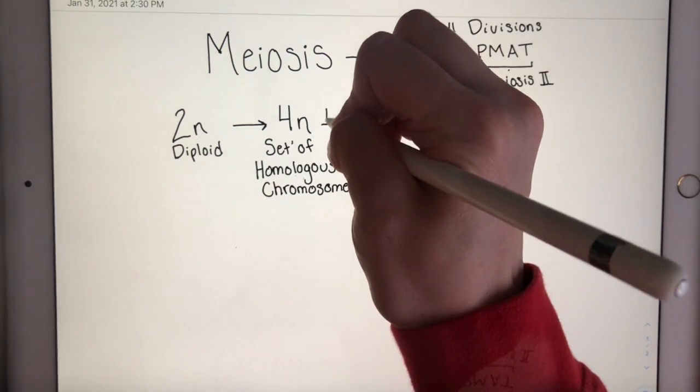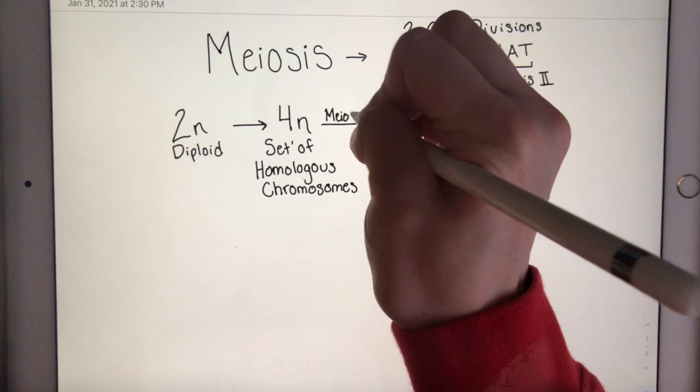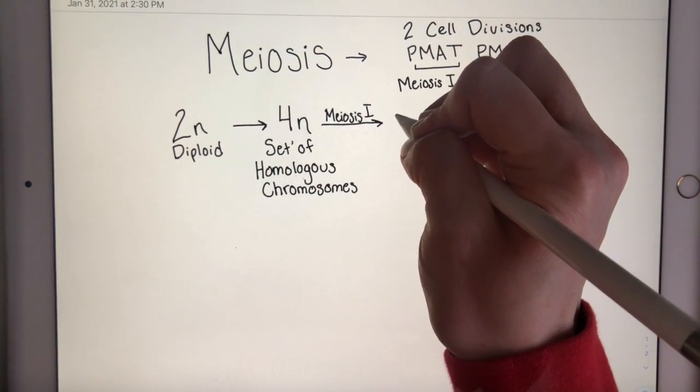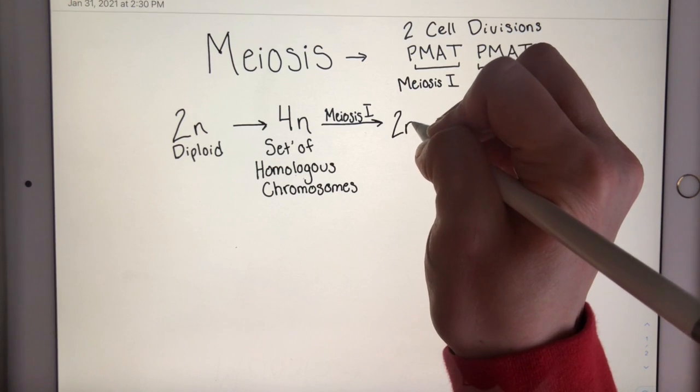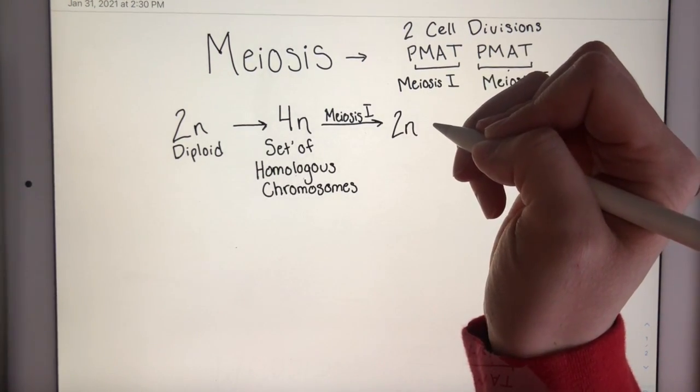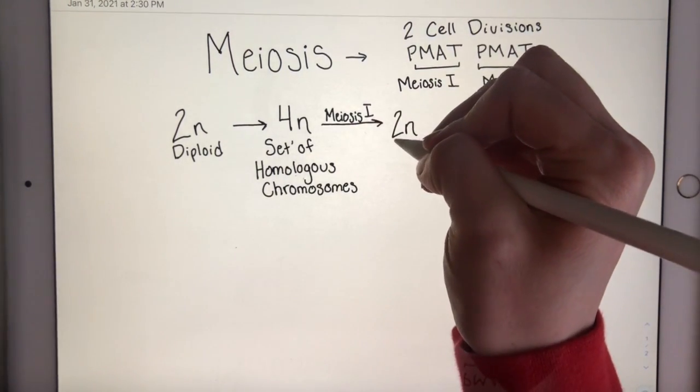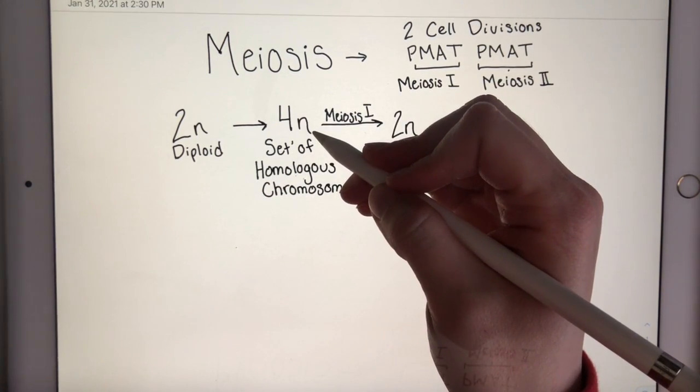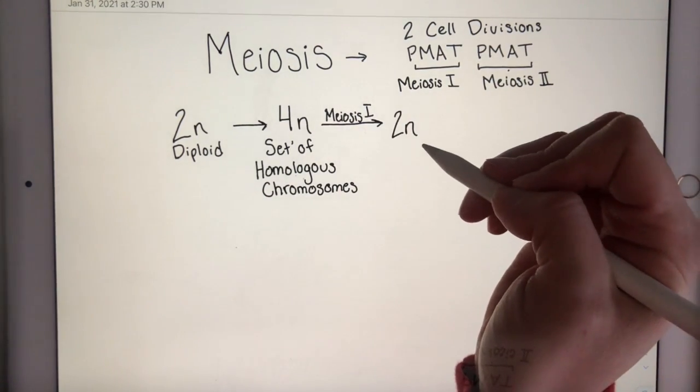Then we have meiosis I. That's going to bring us back down to 2N, our diploid number again. Sometimes meiosis I is called the reduction division because we're reducing the 4N to a 2N.